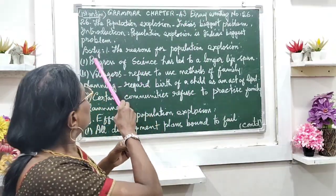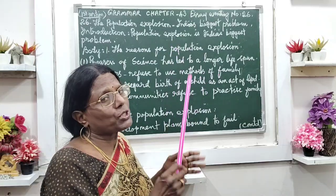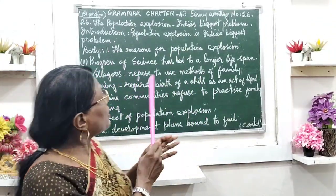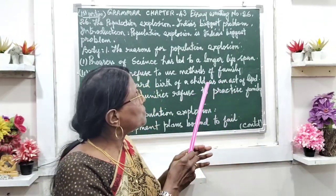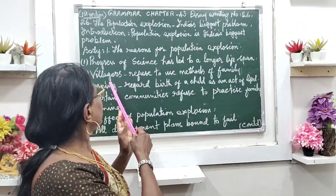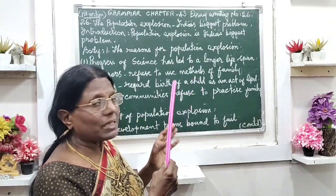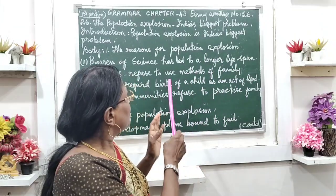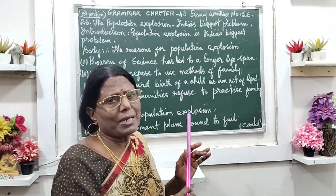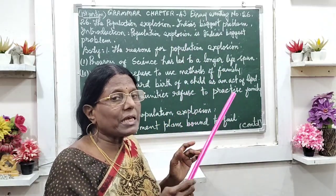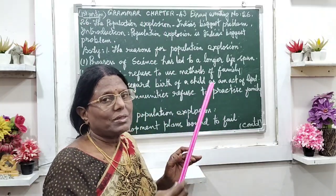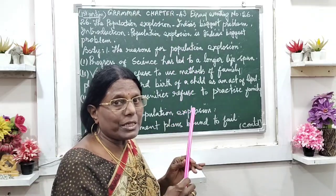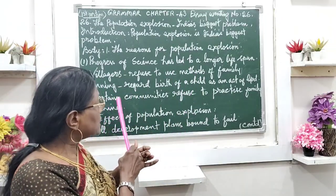In the body, you need to give the reasons for population explosion. Number one: the progress of science has led to a longer lifespan. Next, villagers refuse to use methods of family planning because they feel that a child's birth is an act of God — this is totally refused in villages.